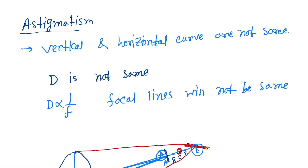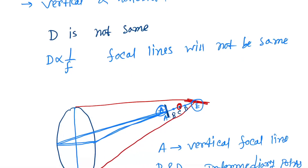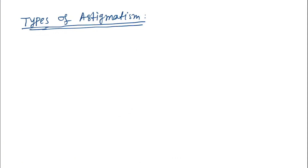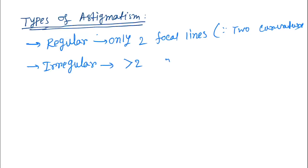Now let's look at the types of astigmatism. They are mainly regular and irregular. Regular astigmatism forms only two focal lines because of two different curvatures. Irregular astigmatism forms more than two focal lines because of greater than two different curvatures.